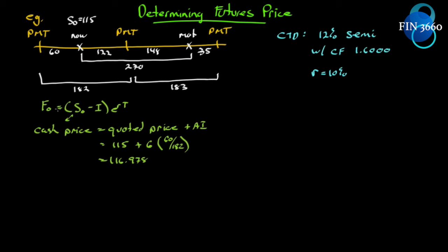We still need I, which is the net present value of all payments received. We're going to receive $6 on the next coupon date. We discount that backwards continuously: I = 6 × e^(-0.1 × 122/365). We're bringing it back 122 days, and we express that as 122/365 — don't fall into the trap of using 122/182. Discounting continuously for that period gives us I = 5.803.